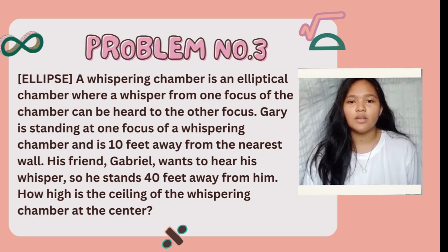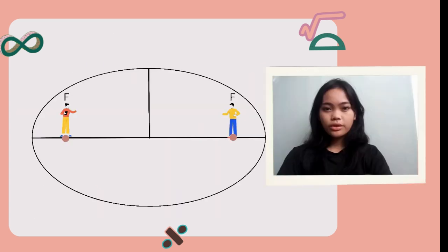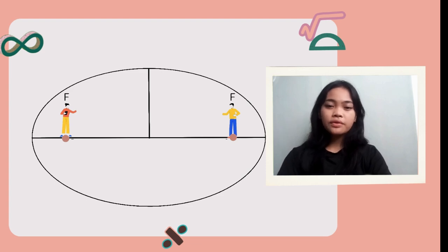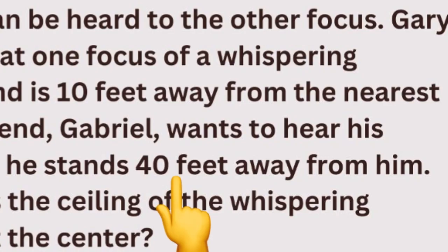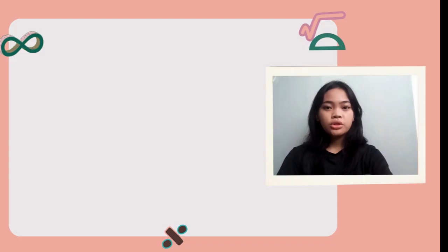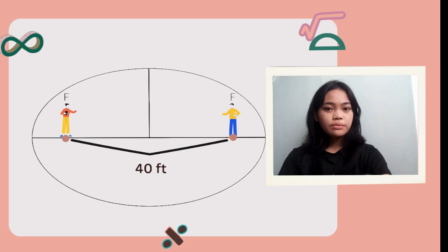How high is the ceiling of the whispering chamber at the center? Using our graph, Gary and Gabriel are on the foci, and based on the problem, they have a 40-foot distance between each other. As a result, our focal distance is also 40 feet.